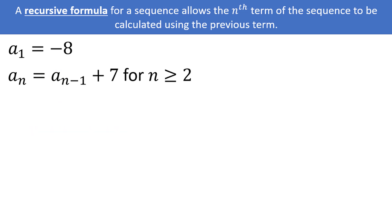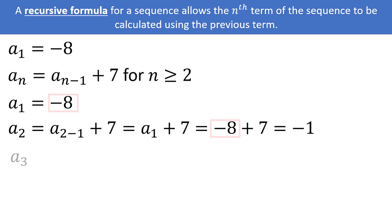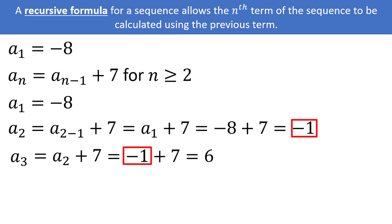We can use the recursive formula to write out a few terms. The first term we already know is negative 8. To find a sub 2, we need to take a sub (2 minus 1), which is a sub 1, and add 7, giving us negative 8 plus 7, which equals negative 1. To find a sub 3, we take a sub 2 and add 7: negative 1 plus 7 equals 6. For a sub 4, we take a sub 3 and add 7: 6 plus 7 equals 13.